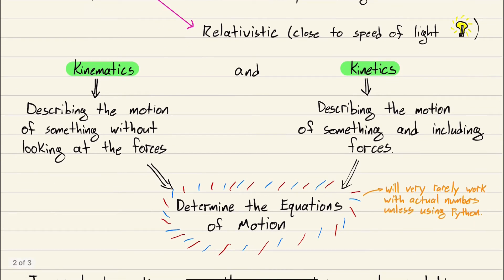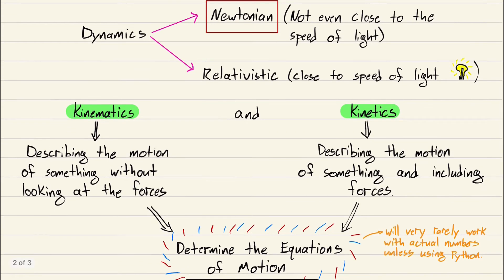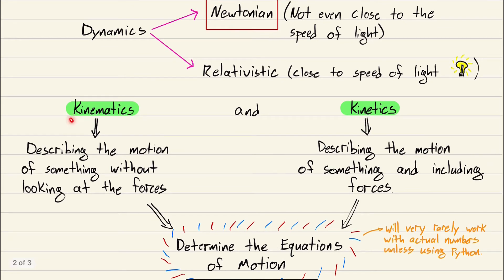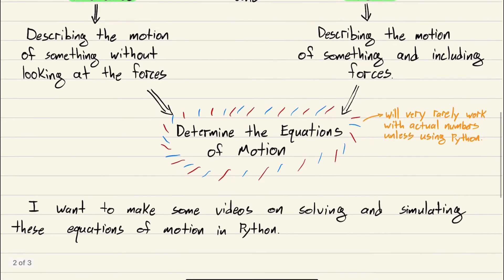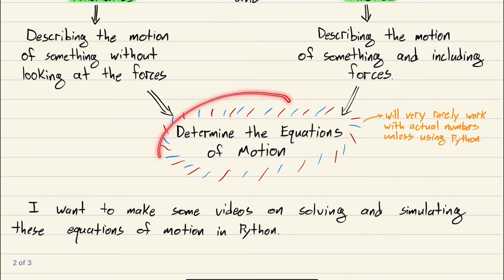The two big topics we need to cover in order to do Newtonian dynamics are kinematics and kinetics. Kinematics deals with describing the motion of something without looking at the forces, whereas kinetics is describing the motion and including the forces. We'll spend time to master kinematics, then later we'll start adding forces because you have to have kinematics down in order to do kinetics.